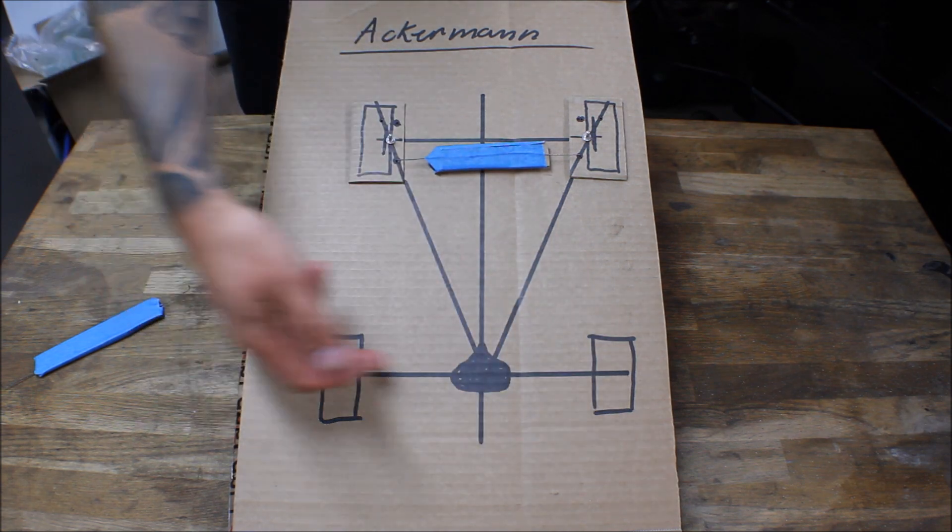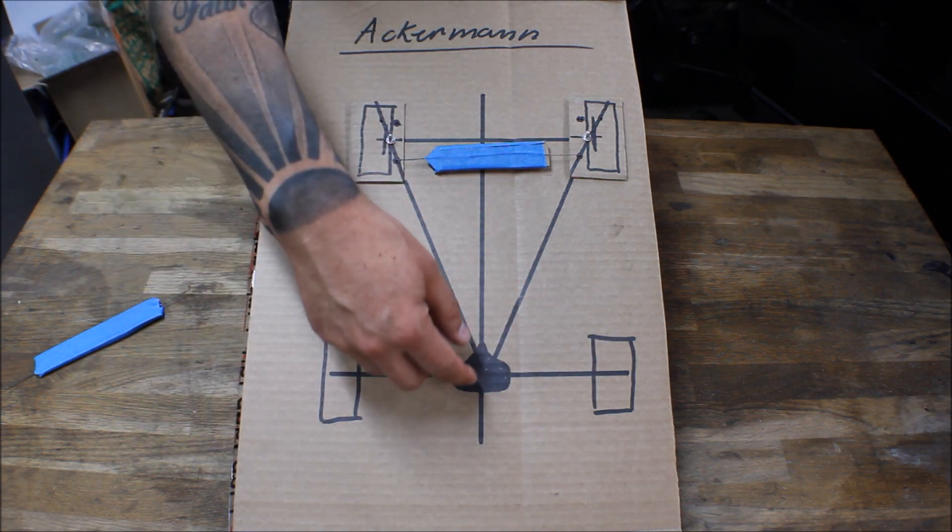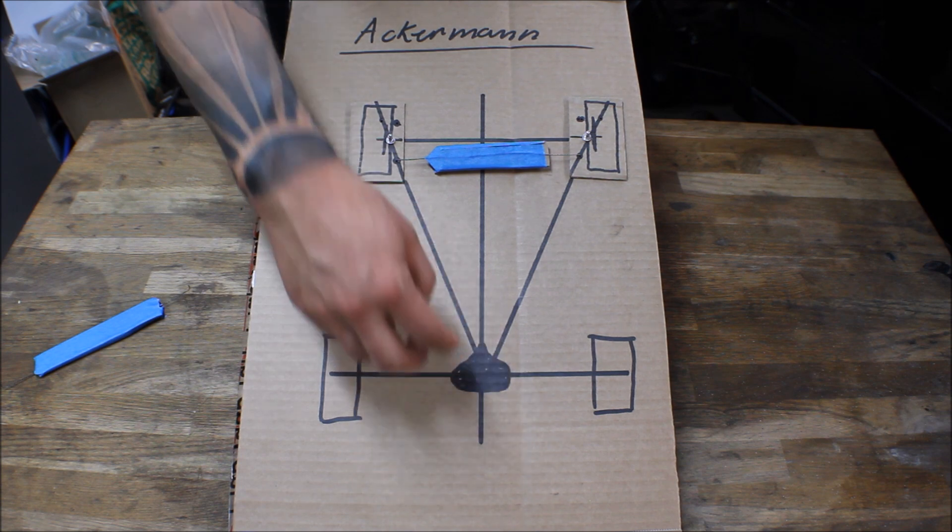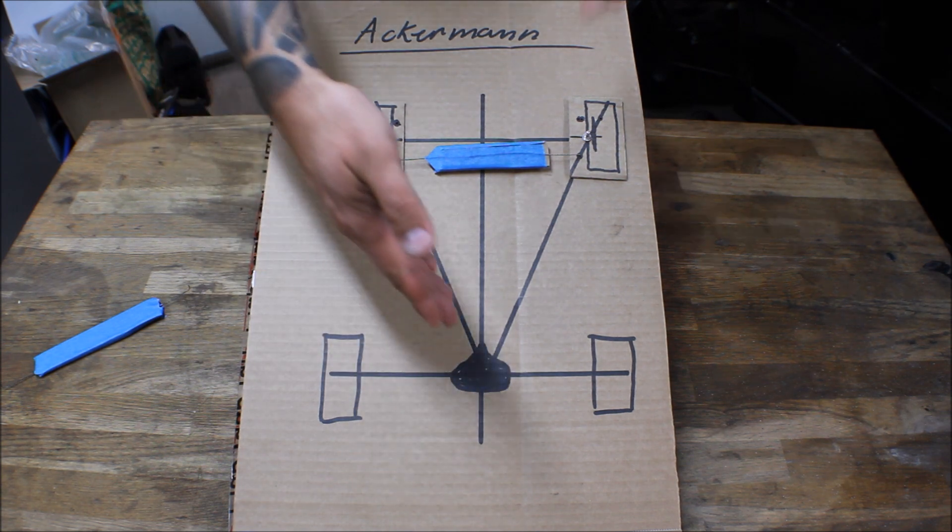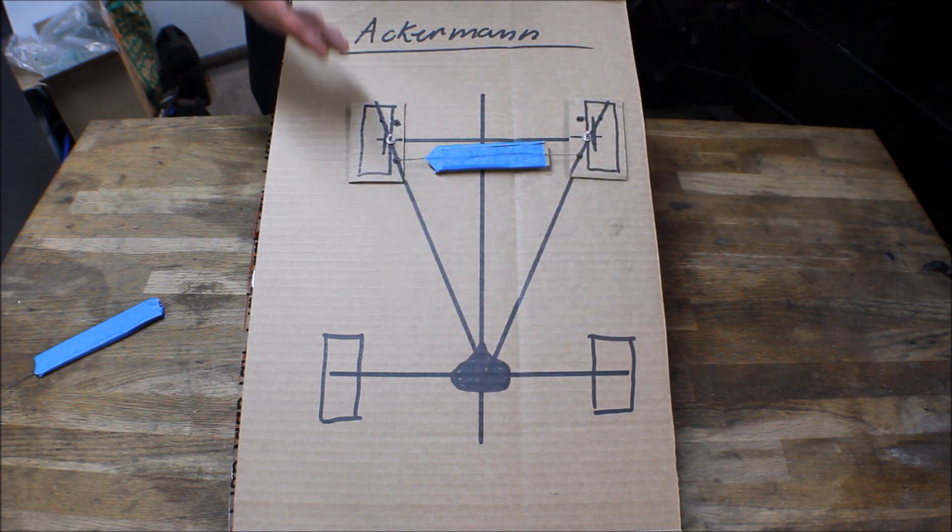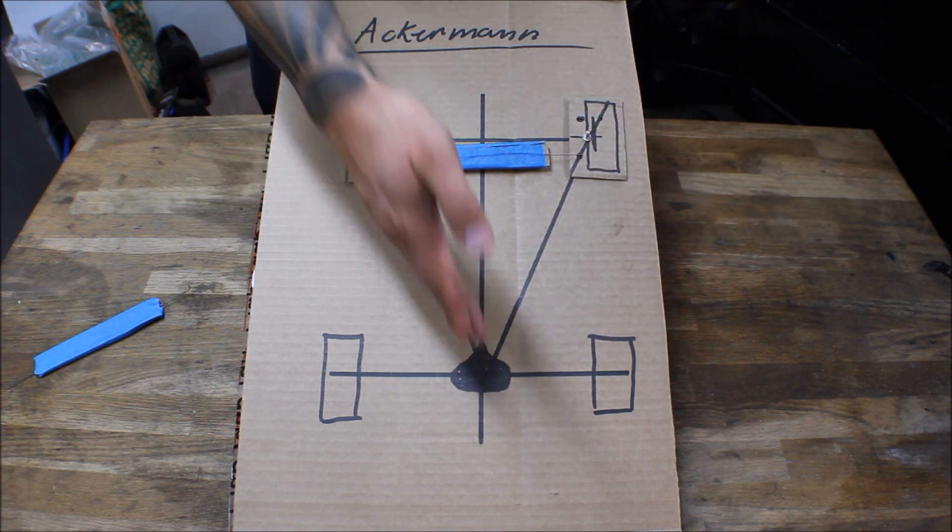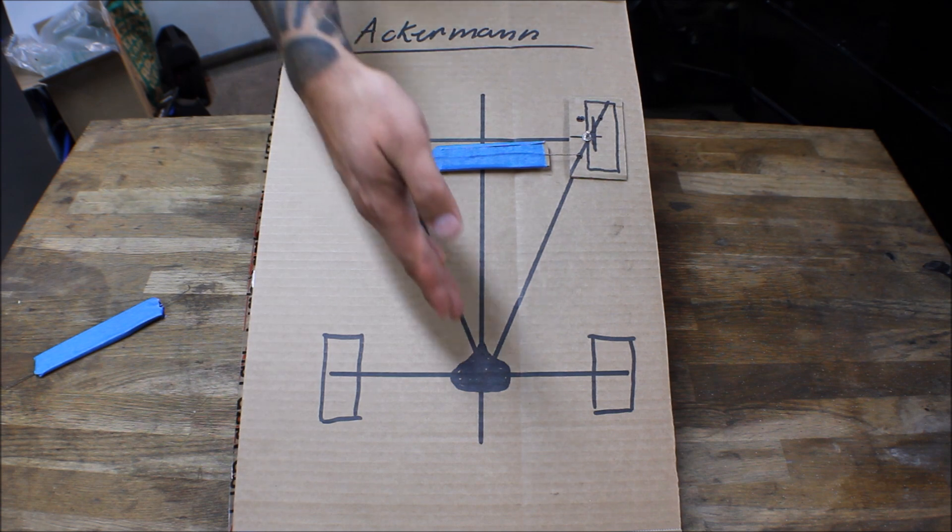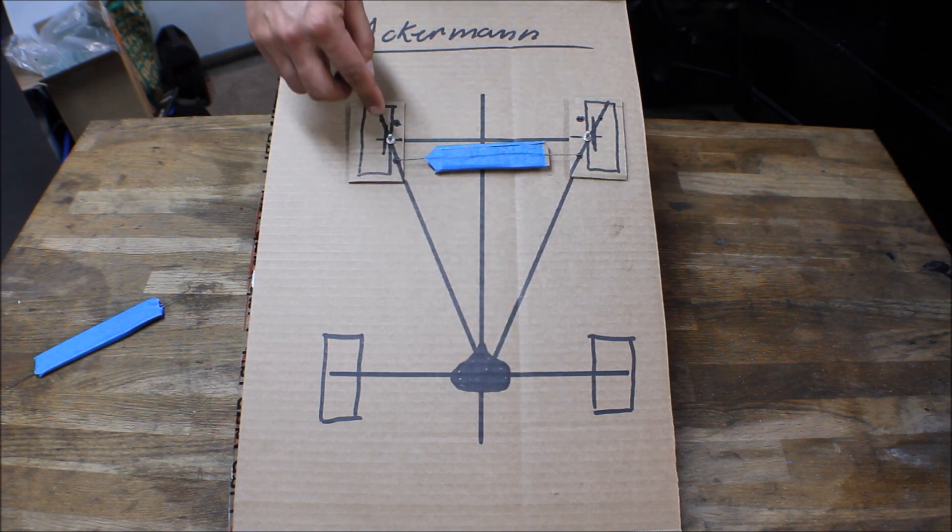In the middle there will be the differential, and if you draw a V-shape out of the middle of the rear axle, you should get these lines through the pivoting point of the steering knuckle and through the attachment point of the steering rack.